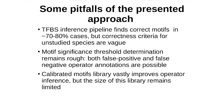Of course, our approach has some pitfalls. First, the transcription factor binding sites inference pipeline finds correct motifs in around 70% of cases, and correctness criteria for unstudied species are vague. Second, motif significance threshold determination remains an open issue, and both false positive and false negative operator annotations are possible. Third, the calibrated motifs library vastly improves operator inference, but the size of this library remains limited.